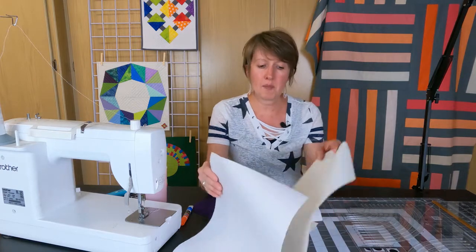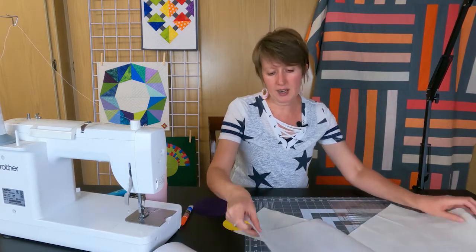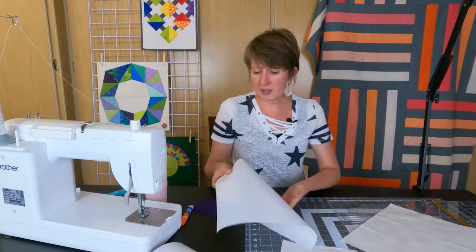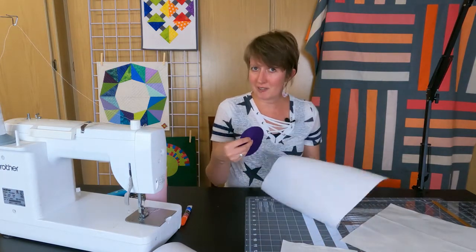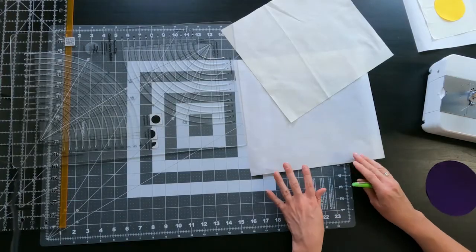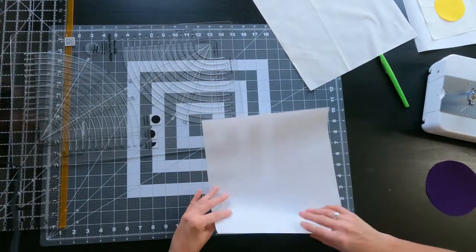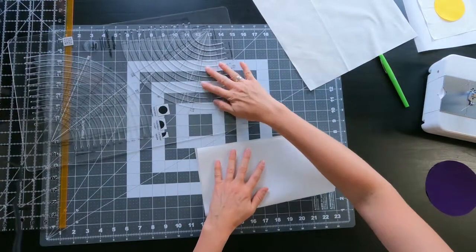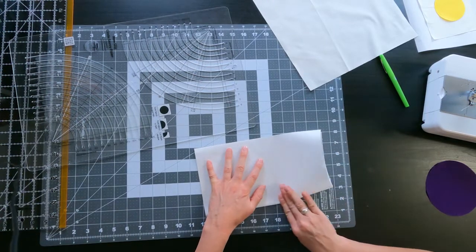So we have our background fabrics here and our freezer paper. The first thing that I need to do is make sure that we've got a circle on that freezer paper. For our freezer paper, we're going to fold it into fourths. I'm going to use this circle cutter to help mark out where that circle needs to be.